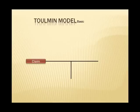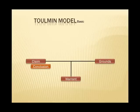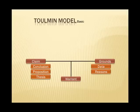Toulmin's model for argument analysis includes six major elements. The first three are the most basic: the claim, the warrant, and the grounds. As with so many theoretical concepts that have developed over time, two of the first three key elements can be referred to by different names.